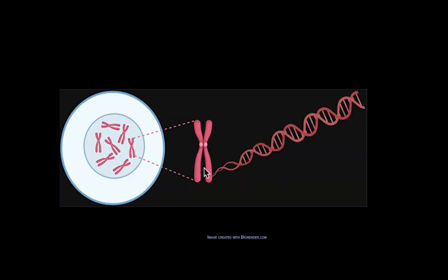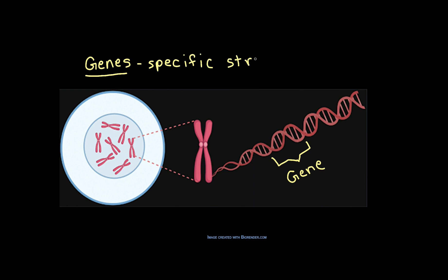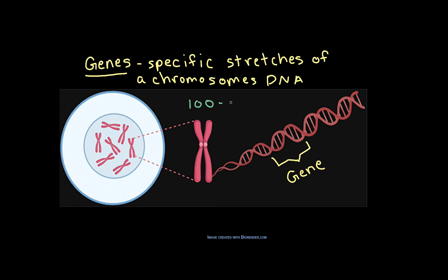A chromosome's DNA molecule is coiled up in an organized way. This diagram shows what the DNA would look like if it were stretched out. This allows us to see where a chromosome's genes are located. Genes are specific stretches of a chromosome's DNA molecule. Each chromosome's DNA can contain hundreds or even thousands of genes. And in multicellular organisms, each cell contains multiple chromosomes. It's the collection of genes and chromosomes that contain the information about all of an organism's inherited traits.